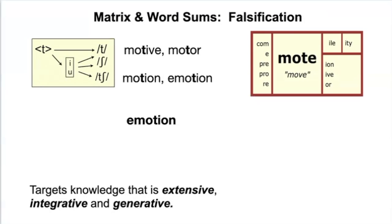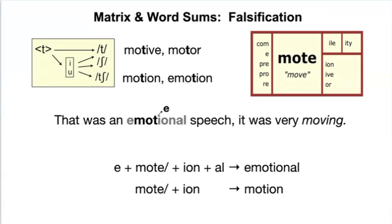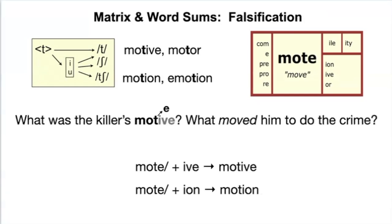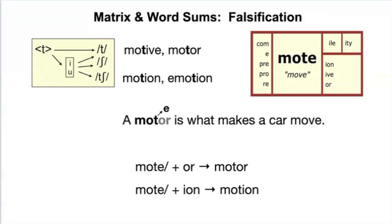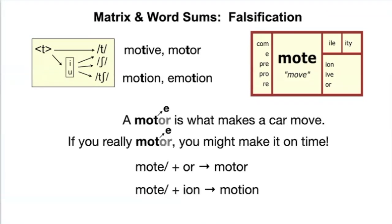With this word, someone may offer: 'That was an emotional speech — it was very moving.' For 'motive': 'What was the killer's motive? What moved him to do the crime?' Of course, a motor is what makes a car move, but I could also say, 'If you really motor, you might make it on time.' These tools provoke rich discussions about shades of meaning of words in any subject. Crucially, dyslexics can engage in grade-level discussions of words they could not read, while drawing their biological spotlights to process concrete representations of the interrelation of the spelling, pronunciation, and meanings of words at their intellectual and curiosity level.